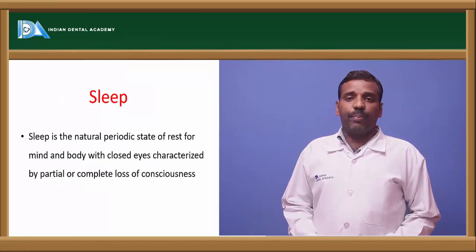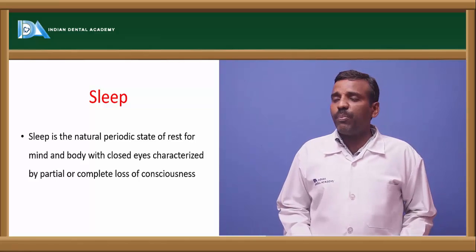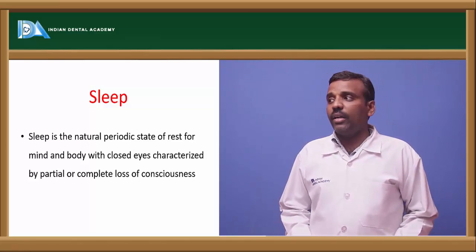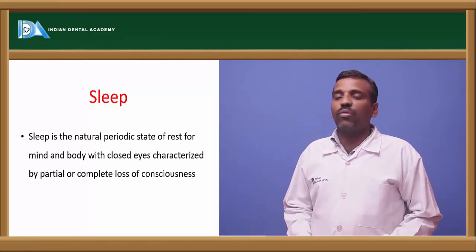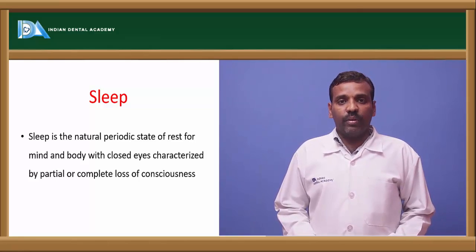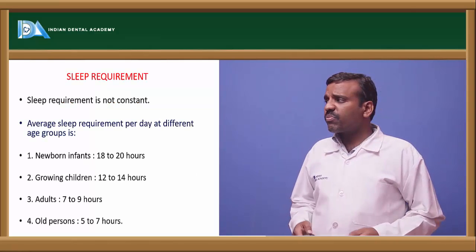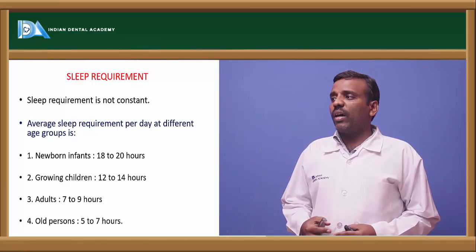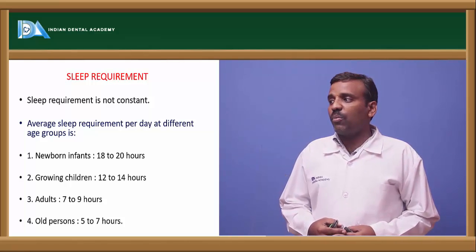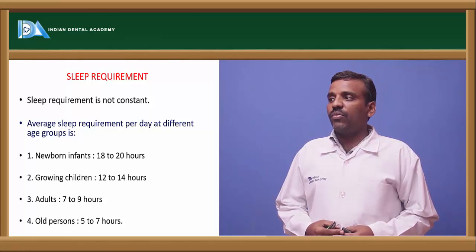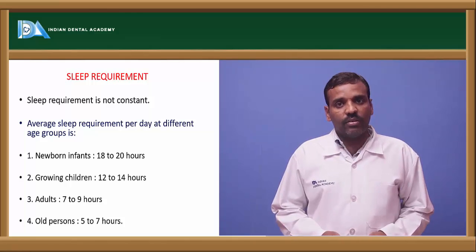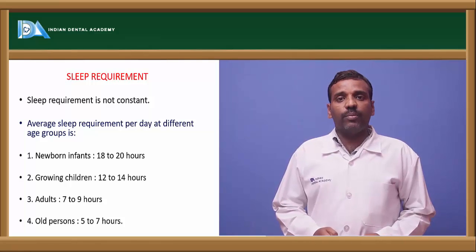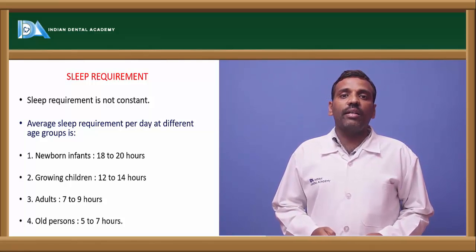Sleep is a natural periodic state of rest of the mind and body with closed eyes, characterized by partial or complete loss of consciousness. Sleep requirements vary: newborns and infants need about 18-20 hours; growing children need 12-14 hours; adults need 7-9 hours; old persons need about 5-7 hours. There are two types of sleep: REM (rapid eye movement) sleep and non-REM sleep.